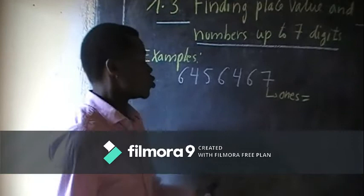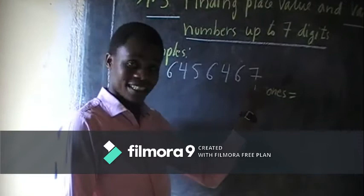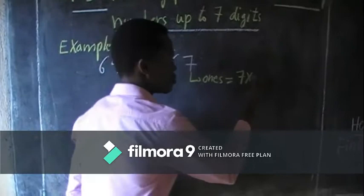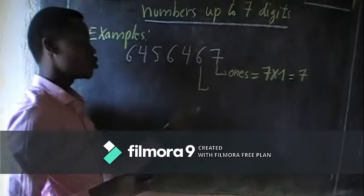How do we find its value? To find the value of a digit, you take that number times its place value. Take seven times its place value. This digit is in the ones place, so we multiply by one. Seven times one is equal to seven.